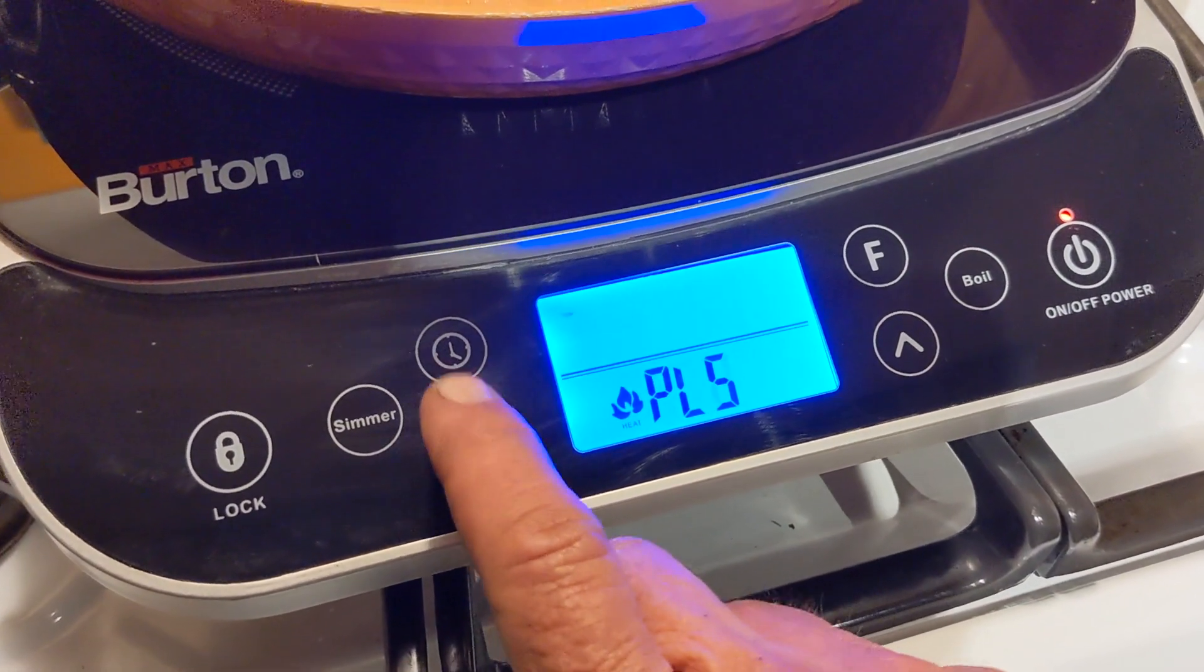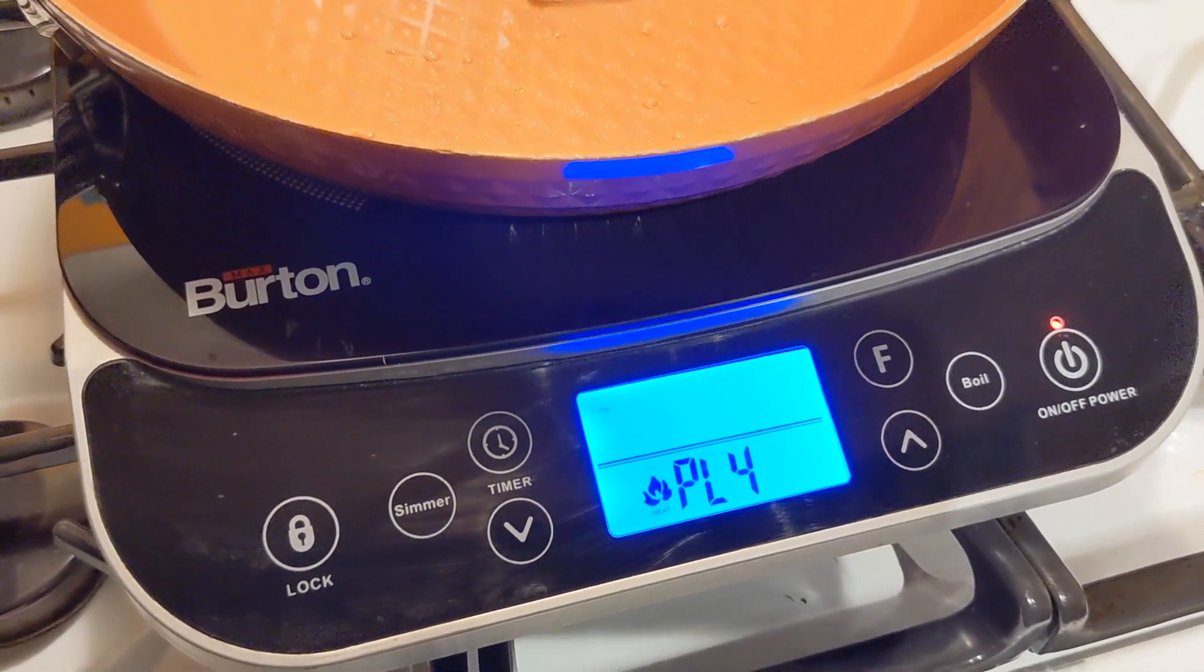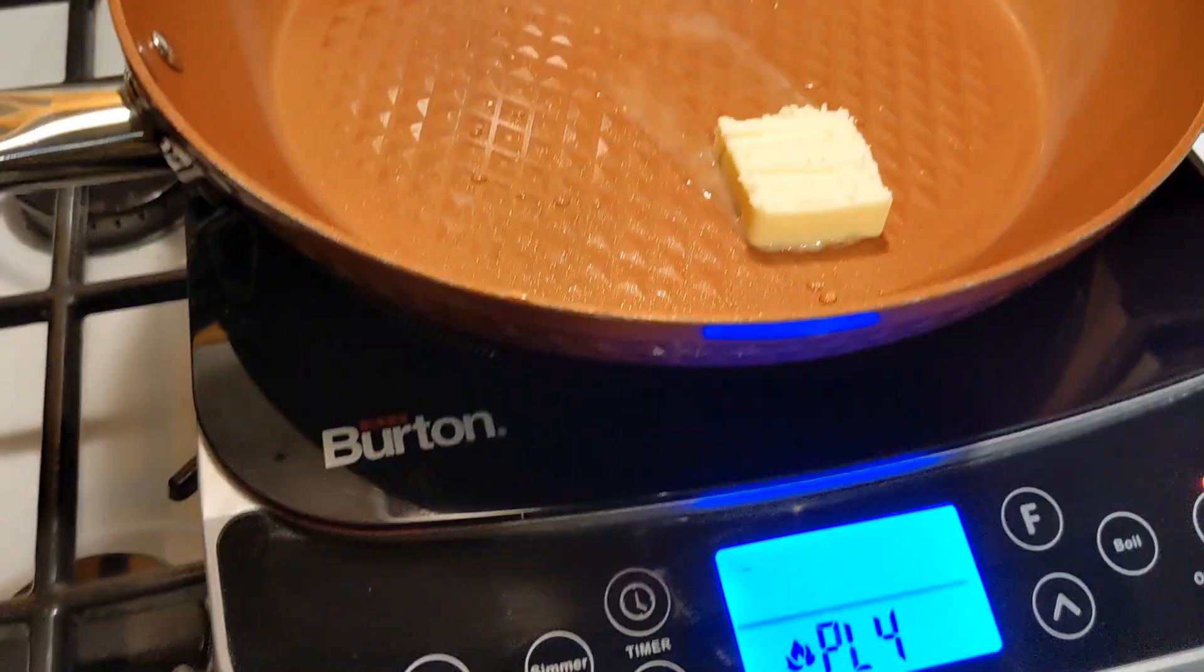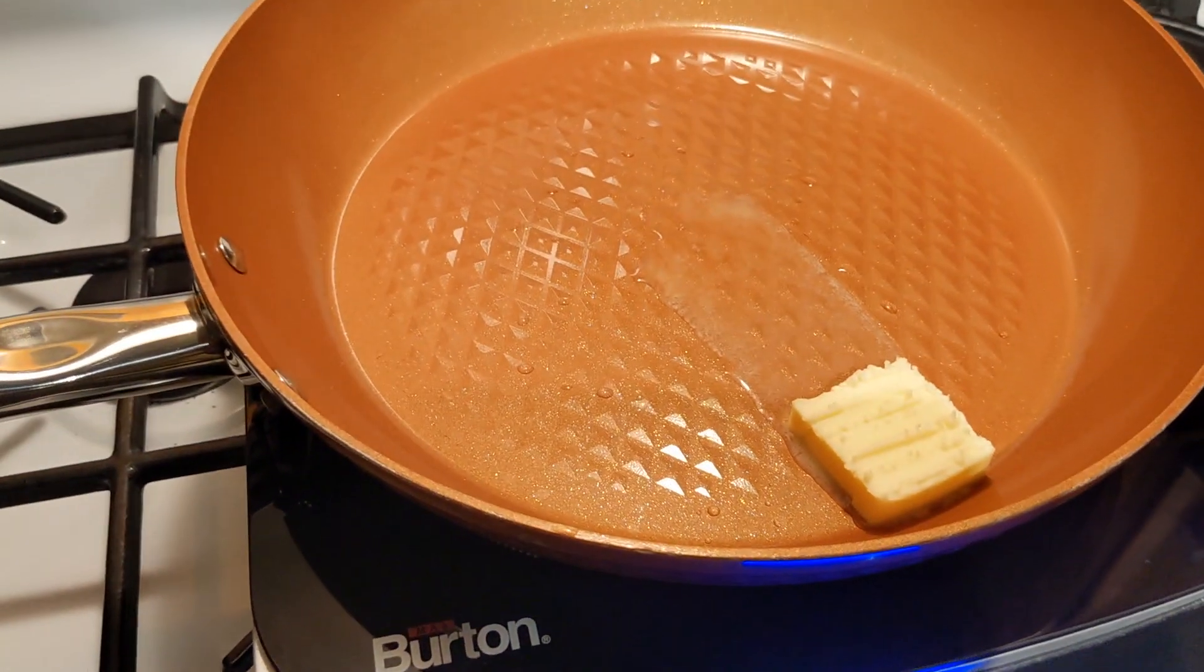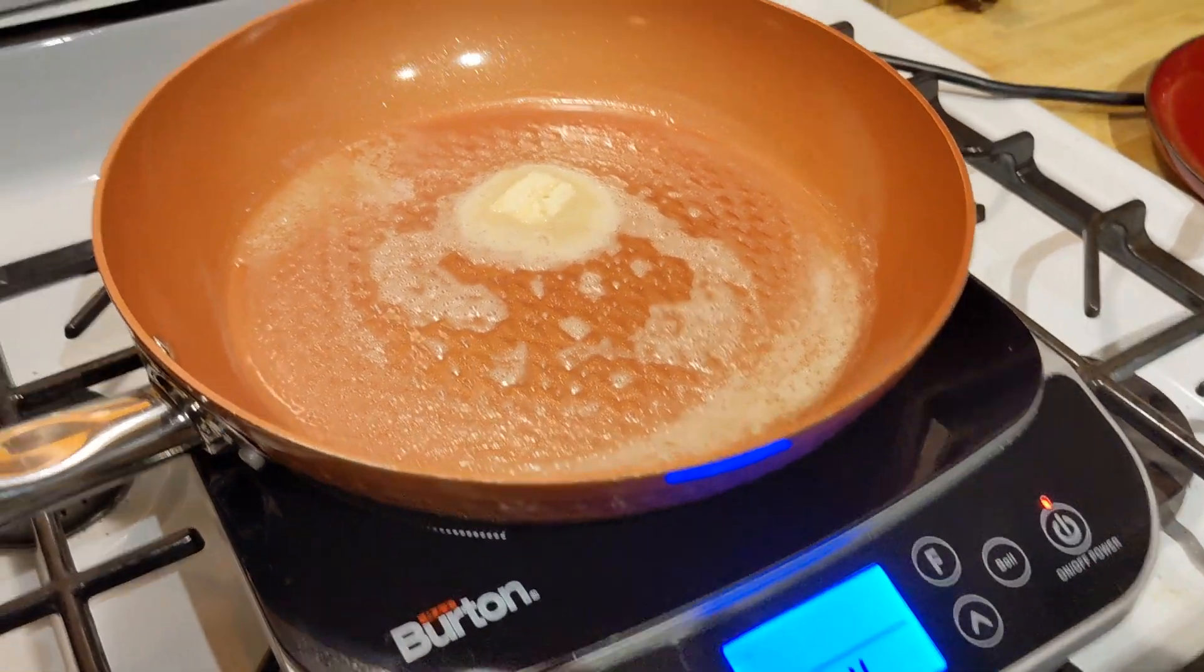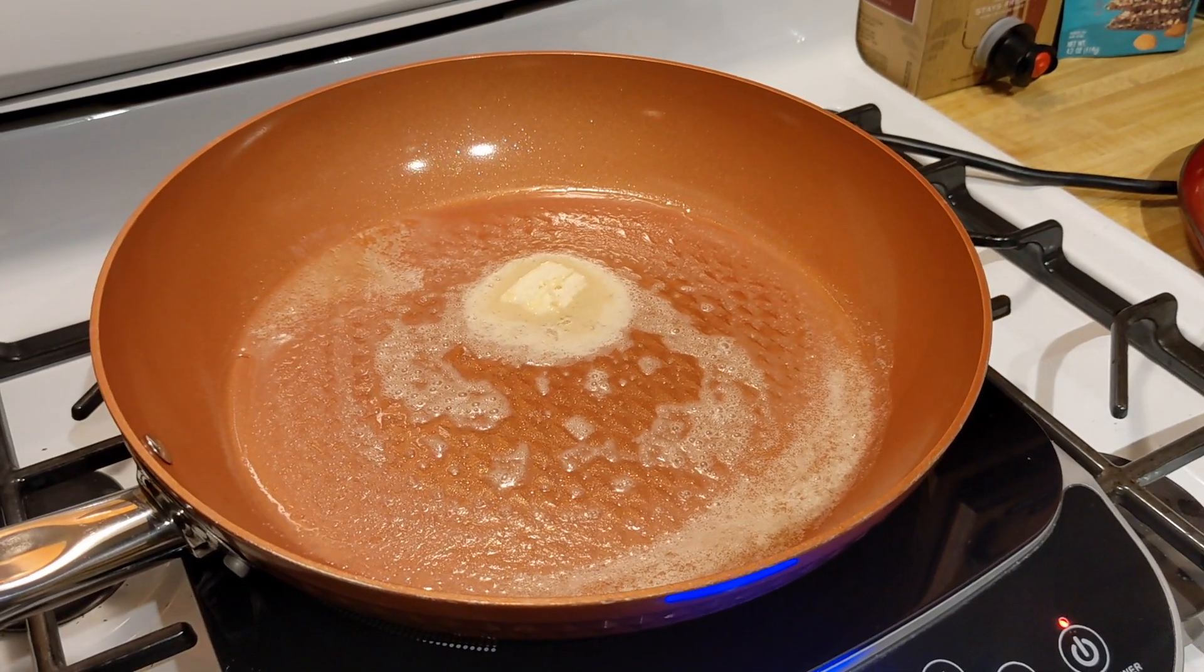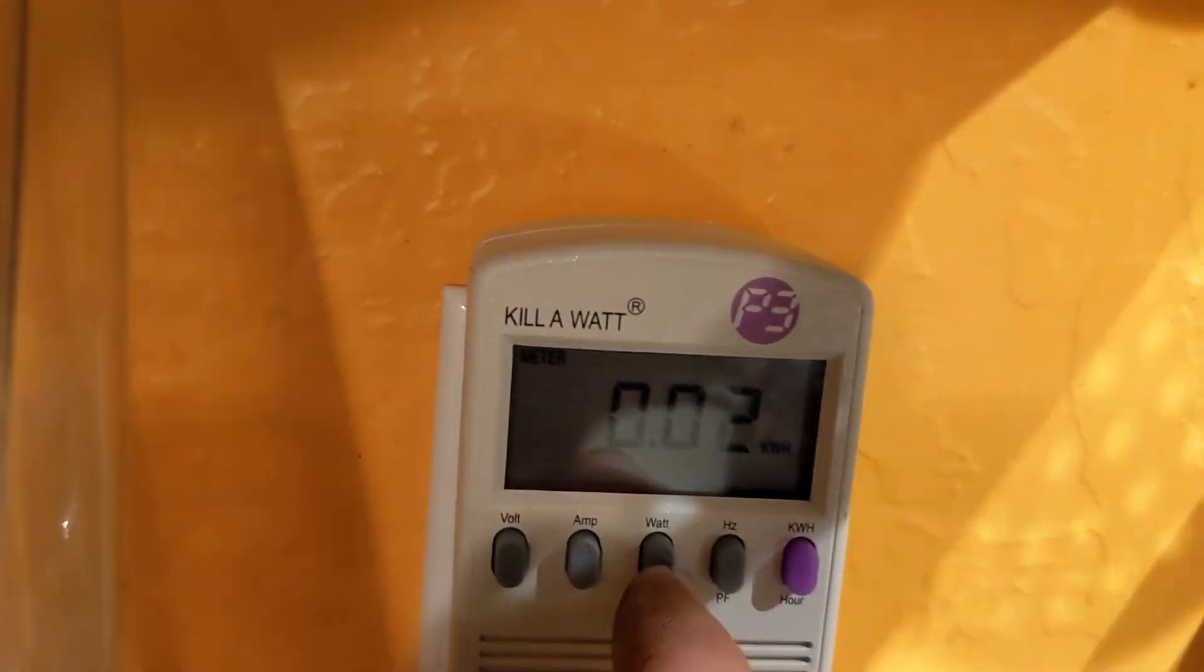It boils water super fast too, by the way, a lot faster than the propane stove. So I'm going to put this on four for now and melt some butter. And once the butter's melted, I'll throw the ribeye in there.